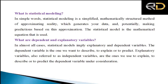In simple terms, statistical modeling is a simplified mathematical structure — the establishment of a functional relationship between dependent and independent variables. The independent or explanatory variable can take any value, while the dependent variable depends on that particular characteristic.